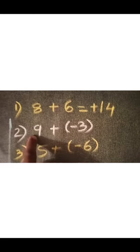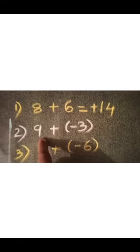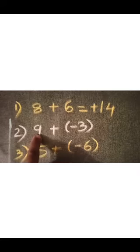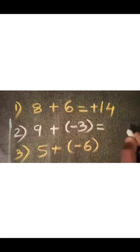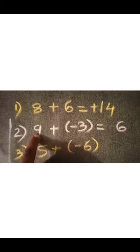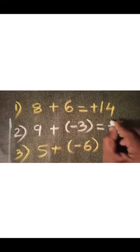Second question: 9 plus minus 3. Here 9 is a positive integer and 3 is a negative integer. According to the second rule, when adding integers with different signs, ignore the sign and subtract the smaller number from the bigger one. Then give the sign of the bigger number to the difference. So 9 minus 3 equals 6. The bigger number is 9 and it is positive, so we write plus 6.